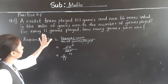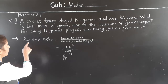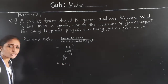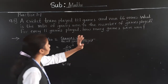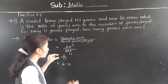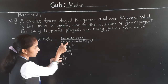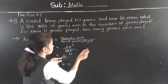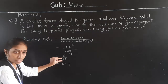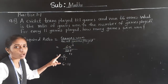After that, what is asked? For every 11 games played, how many games were won? The required ratio we got is 6 is to 11. So for every 11 games played, 6 games were won.